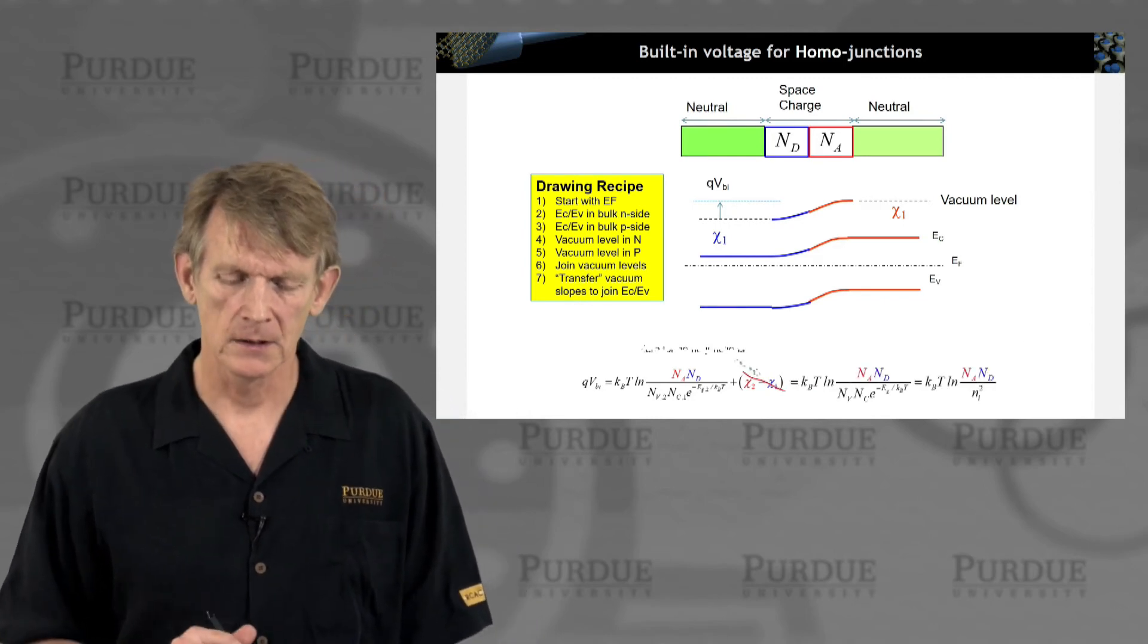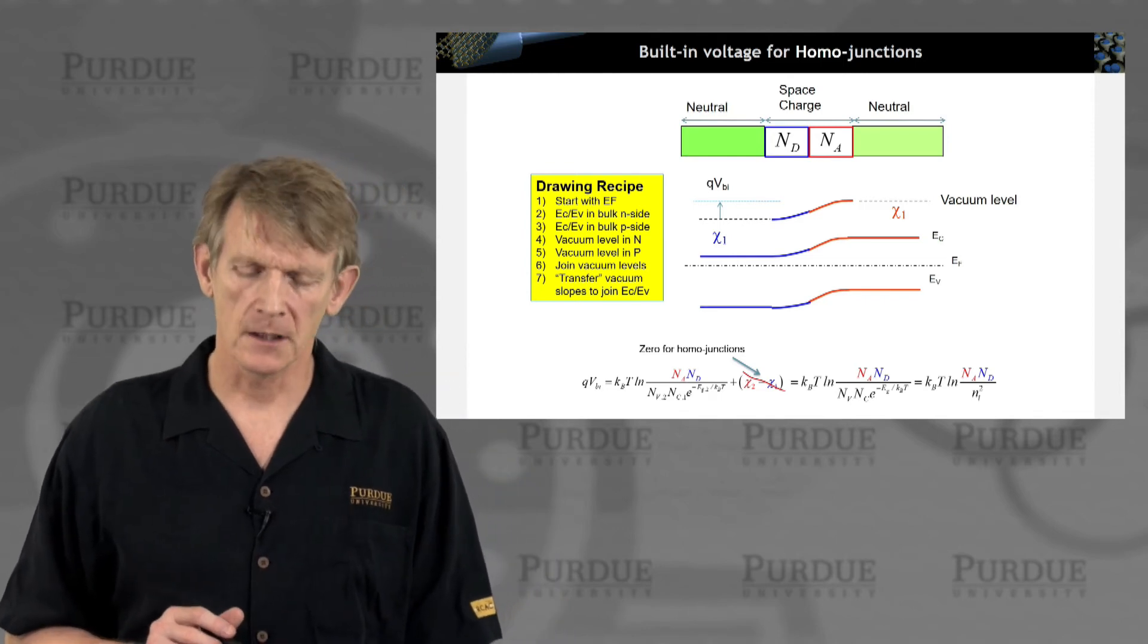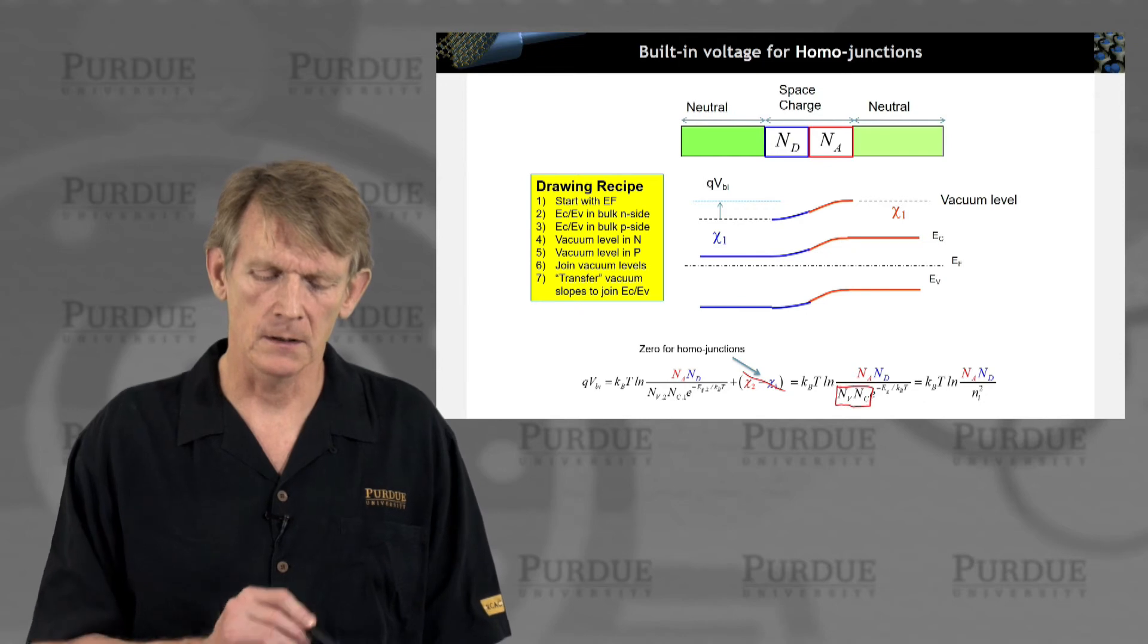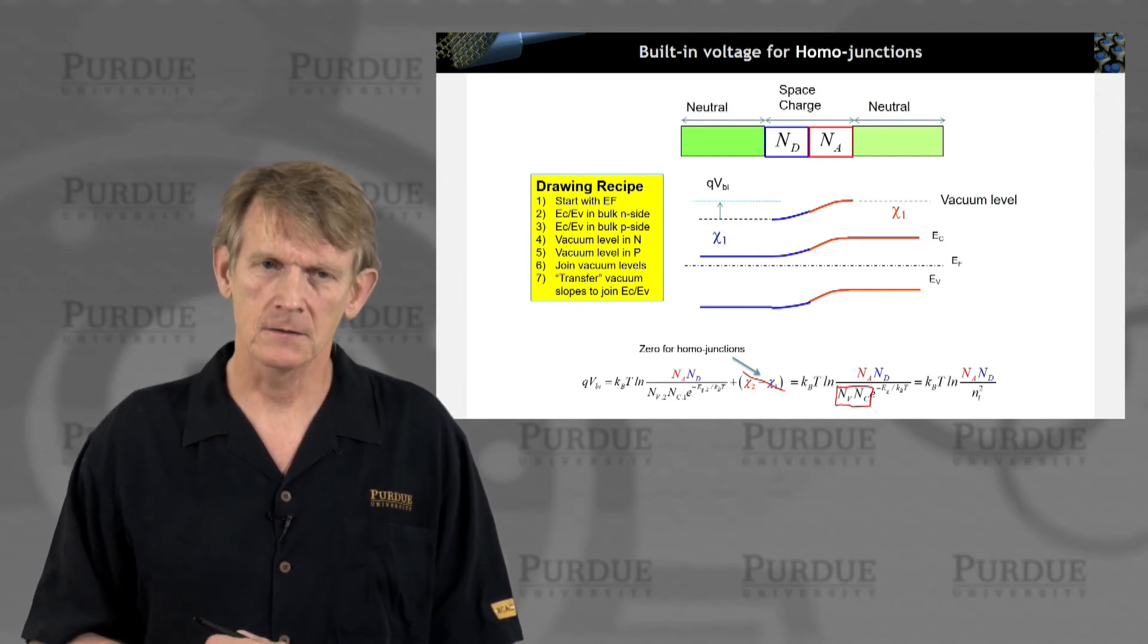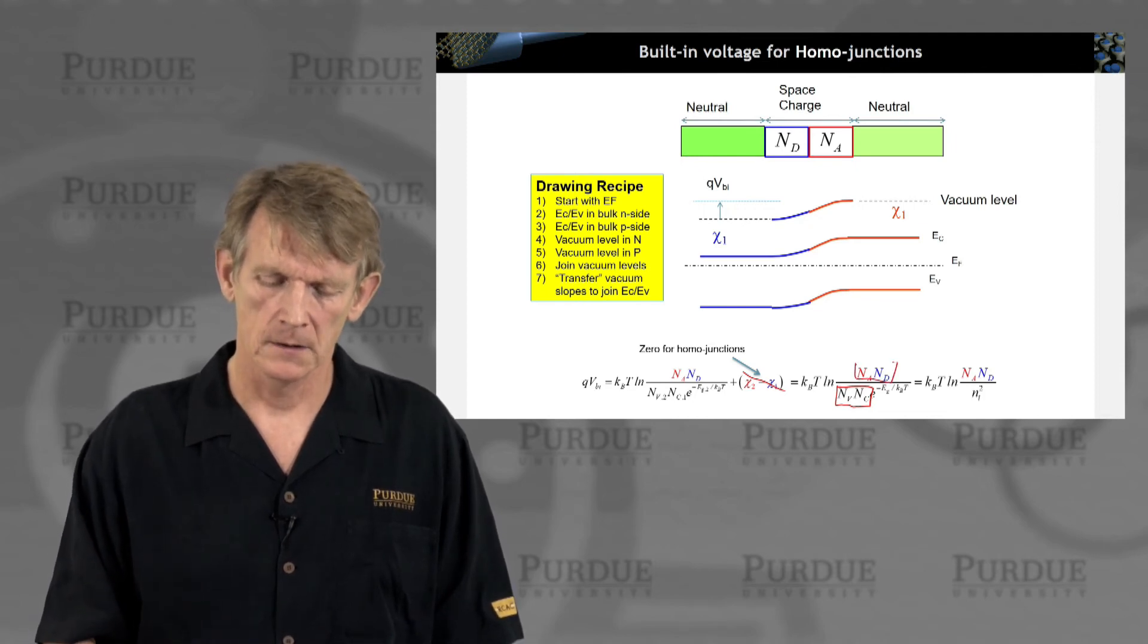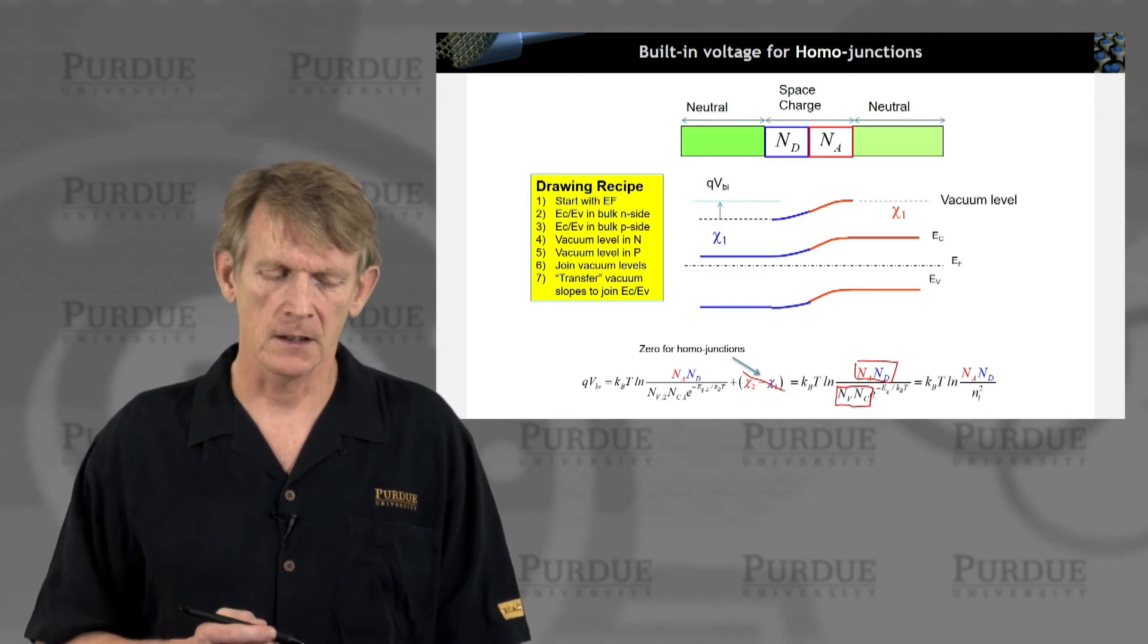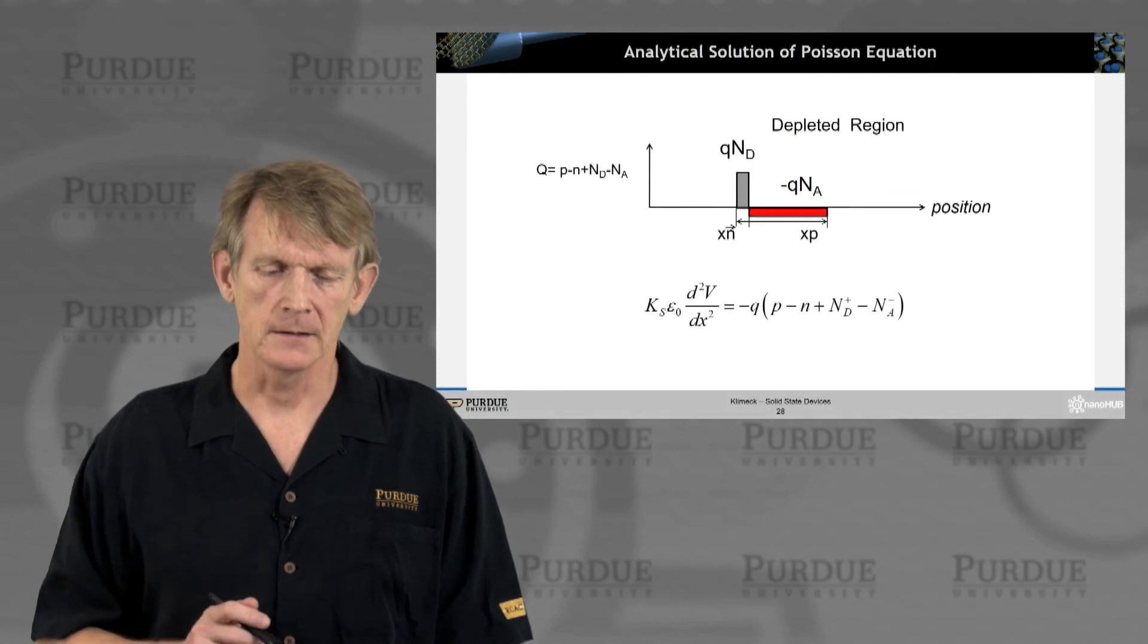If the materials have the same vacuum level, then you don't have the step-like difference in the electrostatic potential. So you have a smooth potential if the vacuum levels are the same in the material. And you get the built-in potential just like you did before. But the difference between chi1 and chi2 falls away. The built-in potential has the same expression. These two guys cancel out. And you basically can plug in numbers, given that if you know the material density of states, dopings, the gap, and temperature.